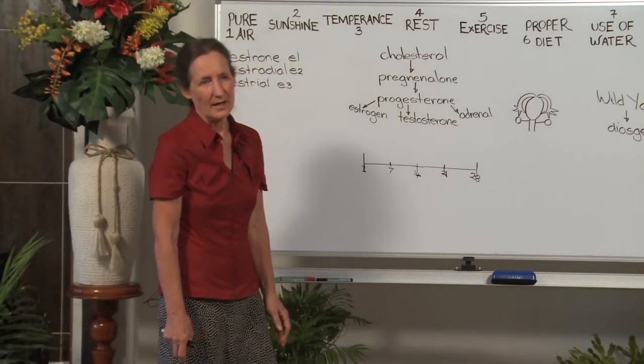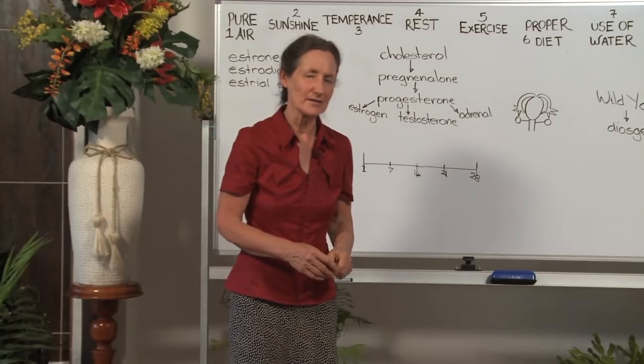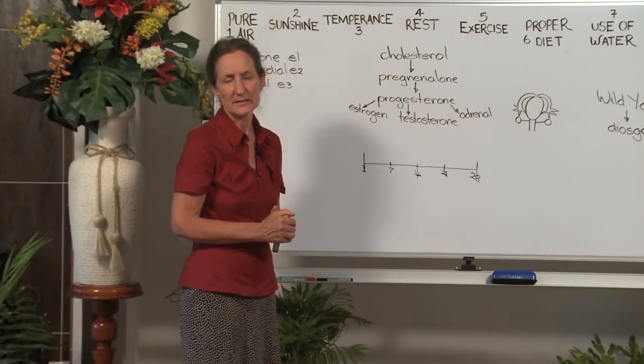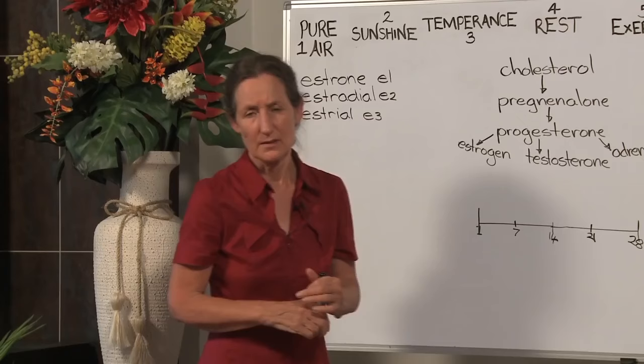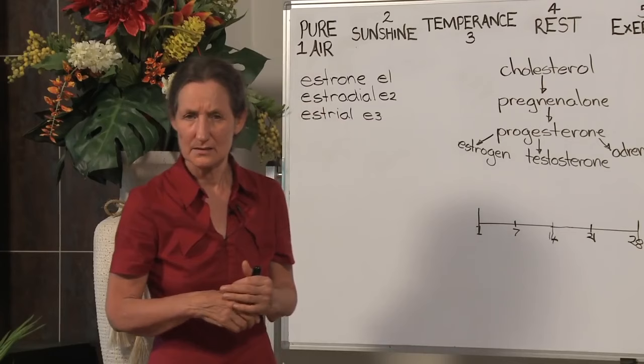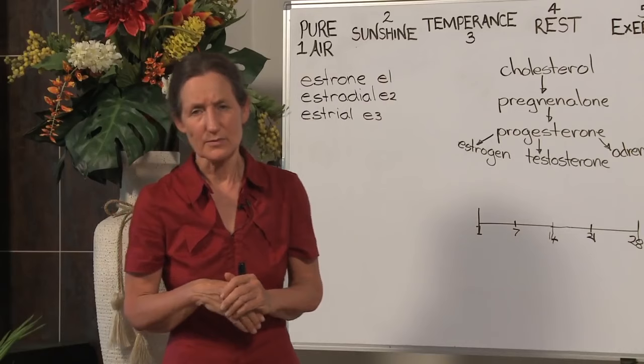Most girls are getting their periods about 13, which is fairly reasonable, but when a young girl is getting her periods at nine, that is definitely a hormonal imbalance. Another symptom would be very heavy periods, very painful periods, and tender breasts at period time. Premenstrual tension is a symptom of hormonal imbalance.